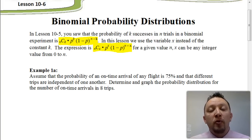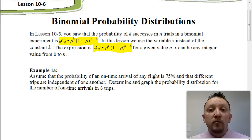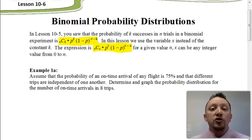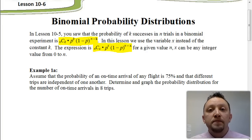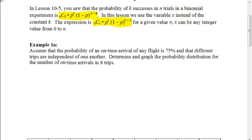Let's look at an example where we're going to be graphing a probability distribution. Later in this lesson, we're going to use a website to do some graphing so we can identify patterns that are important to recognize when we look at the graph of a probability distribution. The example says: assume that the probability of an on-time arrival of any flight is 75%, and that different trips are independent of one another. Determine and graph the probability distribution for the number of on-time arrivals in eight trips.